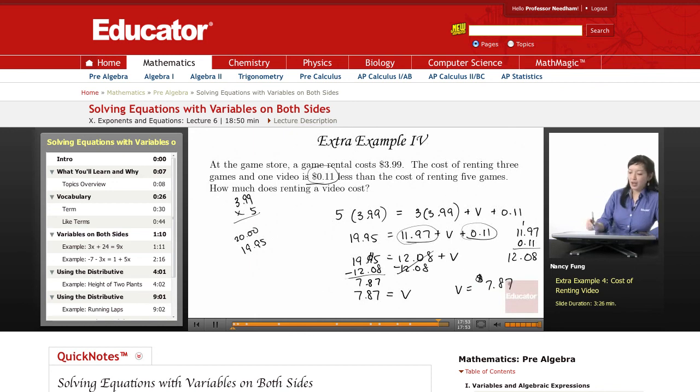Let's go back and check our answer. The cost of renting three games and one video is 11 cents less than the cost of renting five games. So I'm going to say $3.99 times 3. Three times 9 is 27.